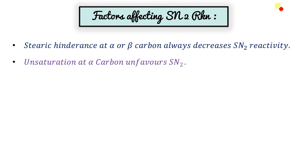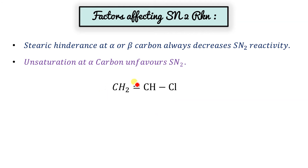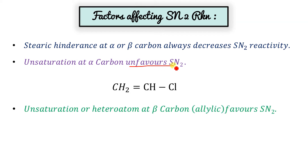Unsaturation at the alpha carbon unfavors SN2 — the transition state cannot form because the nucleophile cannot attack from the backside due to the double bond character. The shorter bond length also prevents backside attack, and hence this unfavors SN2.